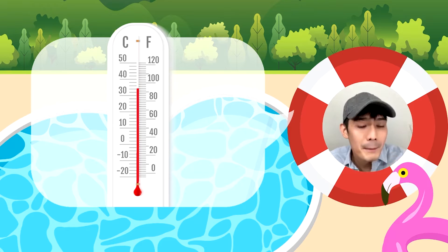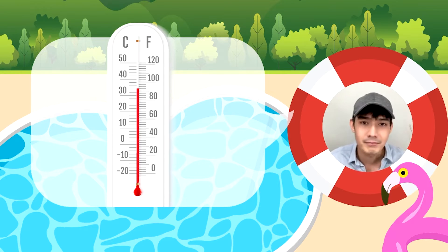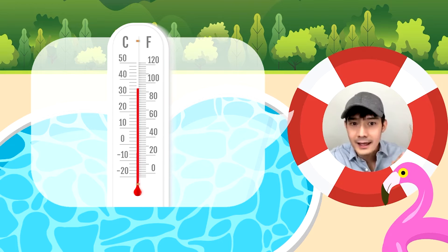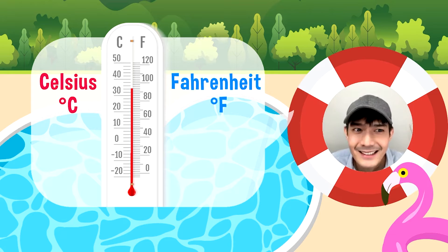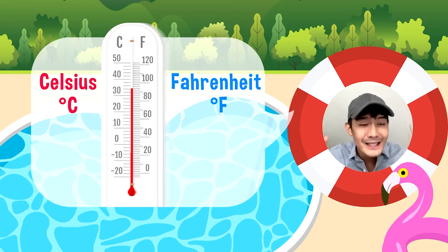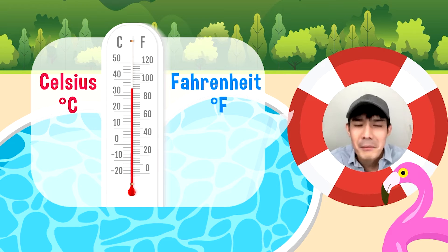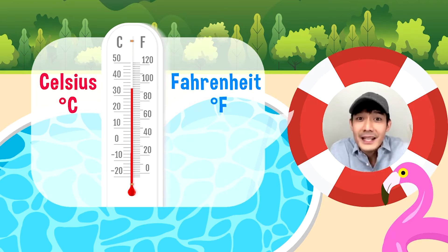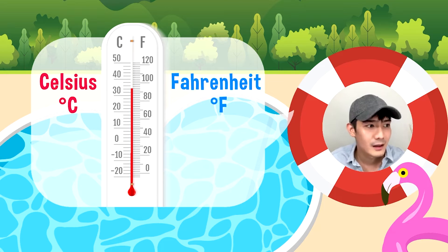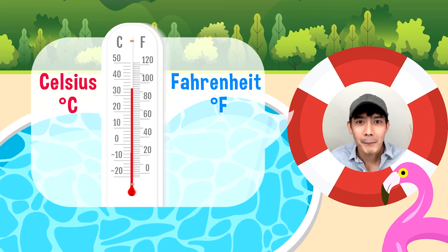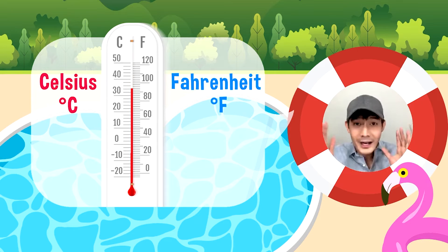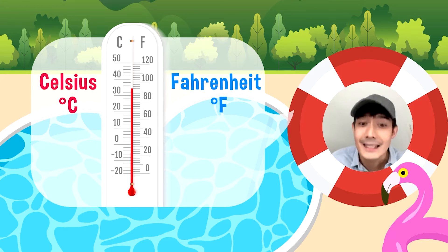Kung mapapansin din natin, may dalawang number sa magkabilang side — yung C sa left ay yun yung Celsius, sa F naman, Fahrenheit. Anong ibig sabihin nun, Kuya Robby? Yung readings niya, pareho lang nakakalibrate — magkaiba lang yung definition. Dahil yun yung ibang ginagamit ng ibang bansa. For example, ang kilometer sa mile, parang ganun — ang pounds sa grams or kilograms. Metric system. Pero ngayon, ang focus natin ay ang Celsius.